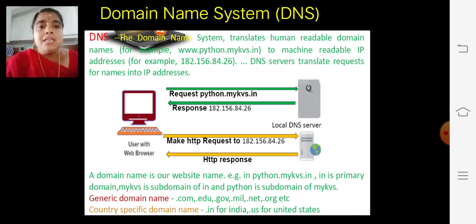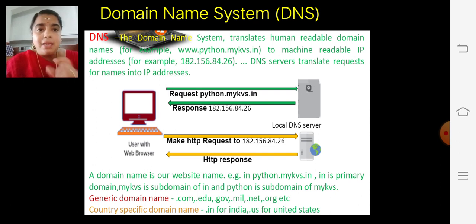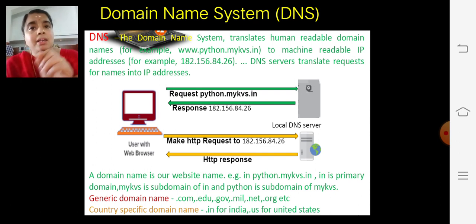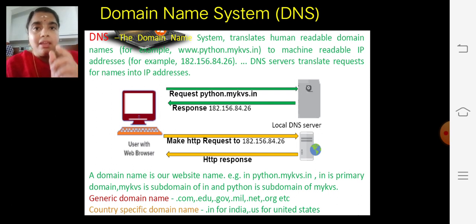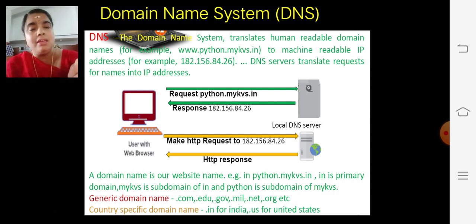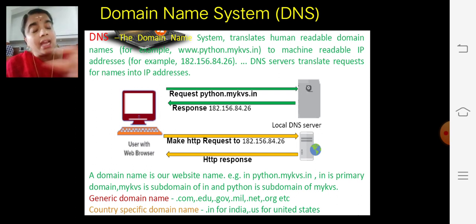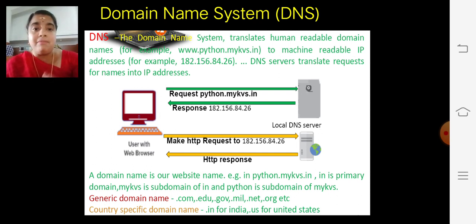So the domain name is our website name. It is the primary domain name — it is nothing but what comes after 'www'. After the dot, what follows is a subdomain. Like that, a domain name has various domain name levels.